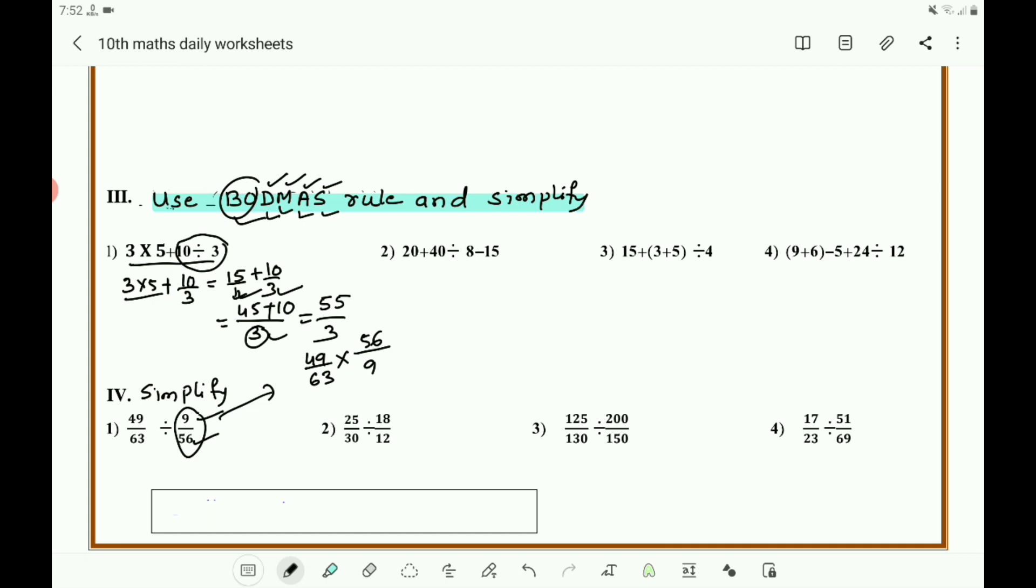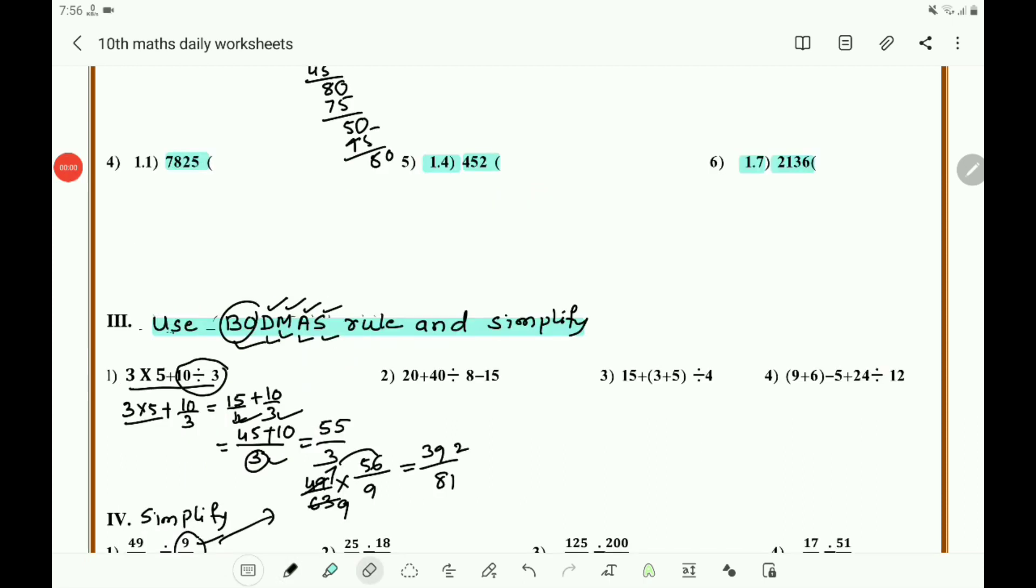Then here what you can do - you know 7 × 7 is 49, 7 × 9 is 63. If possible you can divide again. Then multiply it: 7 × 8 is 56, 9 × 9 is 81.